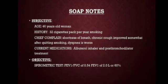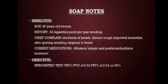In the SOAP note, subjectively, the patient Jo is a 46-year-old woman with a 32 pack-per-year smoking history. After cessation, there is a decrease in cough. Her chief complaint is shortness of breath; chronic cough improved somewhat after quitting but dyspnea is now worse. Current medication is an albuterol inhaler and post-bronchodilator treatment is continued. Objectively, spirometric testing shows an FEV1/FVC of 0.54 and FEV1 of 2.0 liters, or 60 percent predicted.